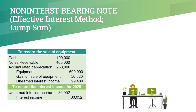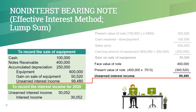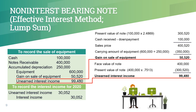And here are the journal entries. Once again, the unearned interest income is the difference between the face value and the present value of the note. The unearned interest income is recognized as income over the term of the note. The gain on sale is computed as the difference between the sales price and the carrying amount of the asset sold. The sales price is the sum of the down payment and the present value of the note.